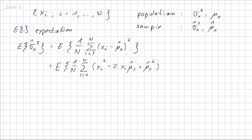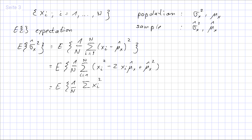We can now distribute the sum across all the terms in the parenthesis. That means we write 1 over n times: the sum over all xᵢ² terms, minus 2 μ̂_x times 1 over n times the sum over all xᵢ's, plus 1 over n times the sum over all μ̂_x squared terms.